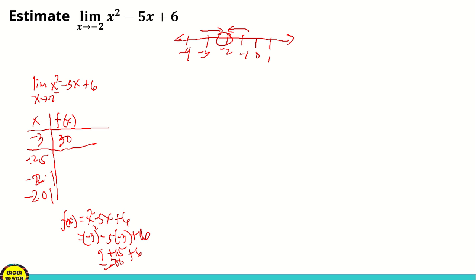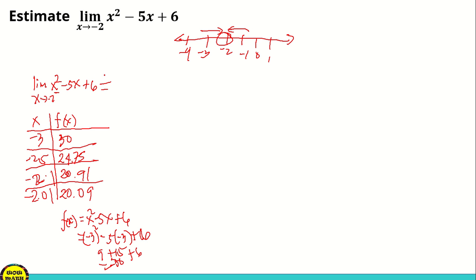So x = -3 gives f(x) = 30. If x is negative 2.5, f(x) is 24.75 — you can check using your calculator. If x is negative 2.1, f(x) is 20.91. And if x is negative 2.01, f(x) is 20.09. As x approaches negative 2 from the left, f(x) approaches 20. So the left-hand limit equals 20.